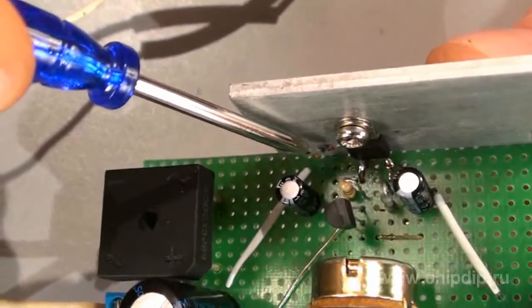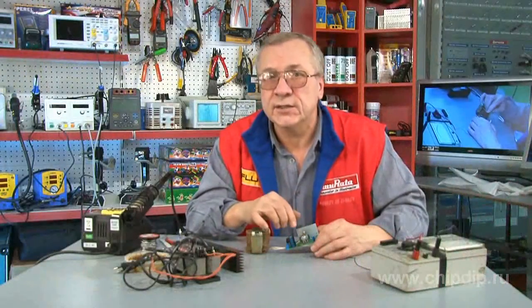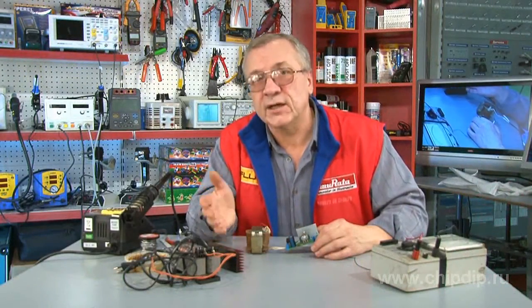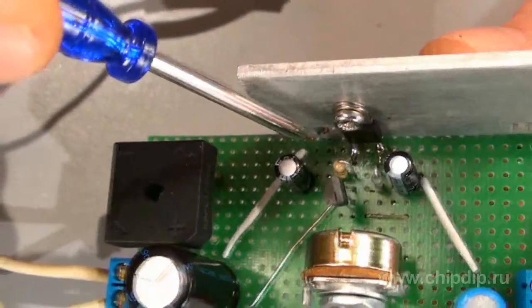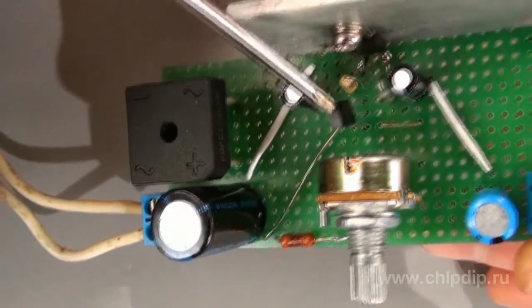Thus the transistor opens. Part of the output voltage is through the transistor divider supplied to the input of the TL431 chip closing the feedback circuit.